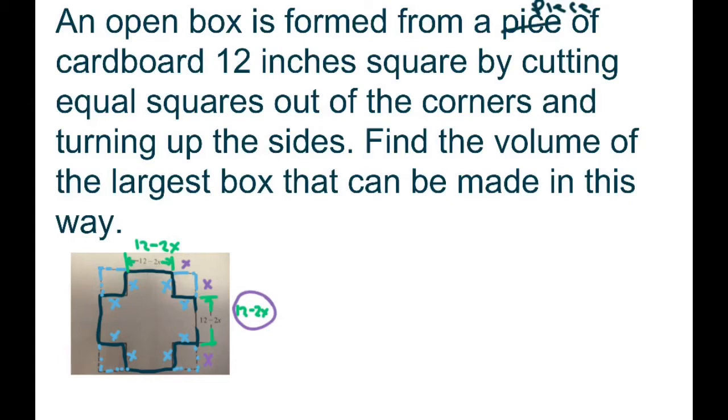So we have the height equals 12 minus 2x and the width, the length, let's call it the length, is also this in here, is also the same thing because we're cutting out the x's here. So this is going to be 12 minus 2x as well, because this is a square box.